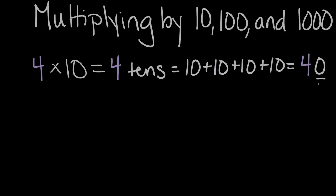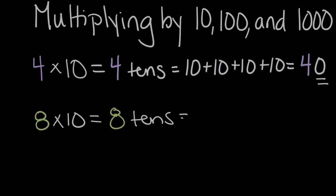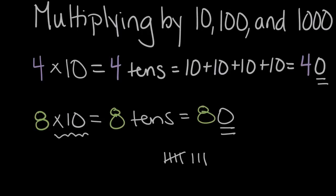This is the pattern we've seen before. When we multiply four times 10, we keep our whole number of four and add a zero to the end for the times 10. Another example might be eight times 10. Eight times 10 is the same as eight 10s. If we count eight 10s: 10, 20, 30, 40, 50, 60, 70, 80. So the solution was 80, or an eight with a zero on the end. When we multiply a whole number times 10, we end up adding a zero to the end of our whole number.